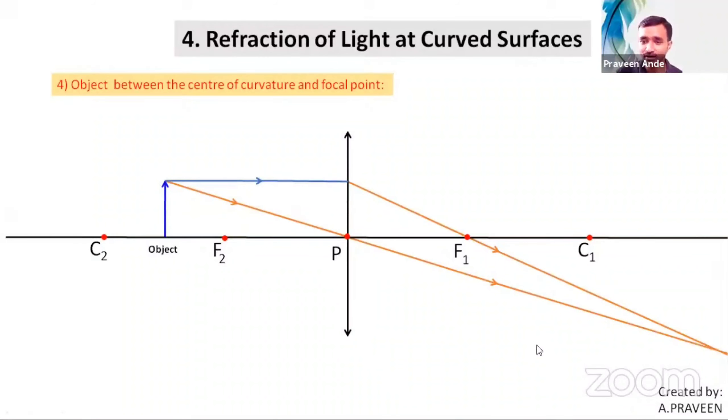Let me write the characteristics. One is real image. Next one is inverted image. Next, it is magnified. Next, beyond the center of curvature. Is it clear? So draw the ray diagram properly using the scale.